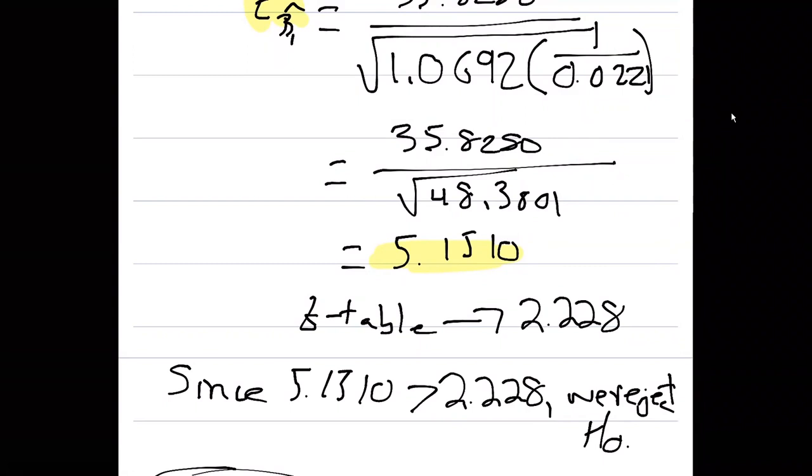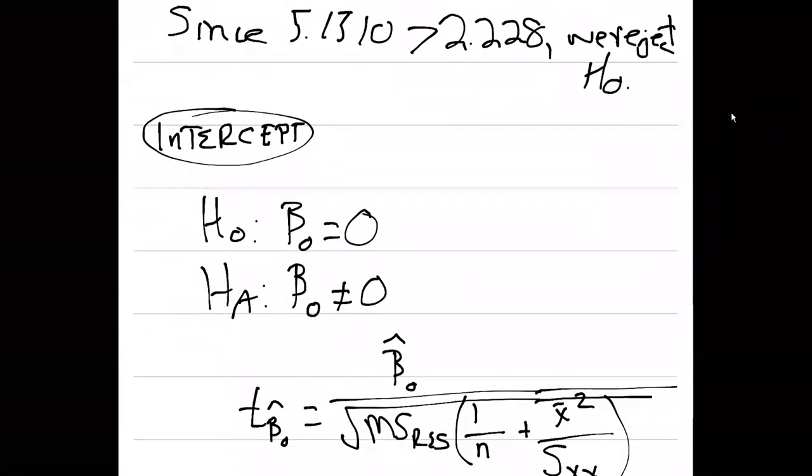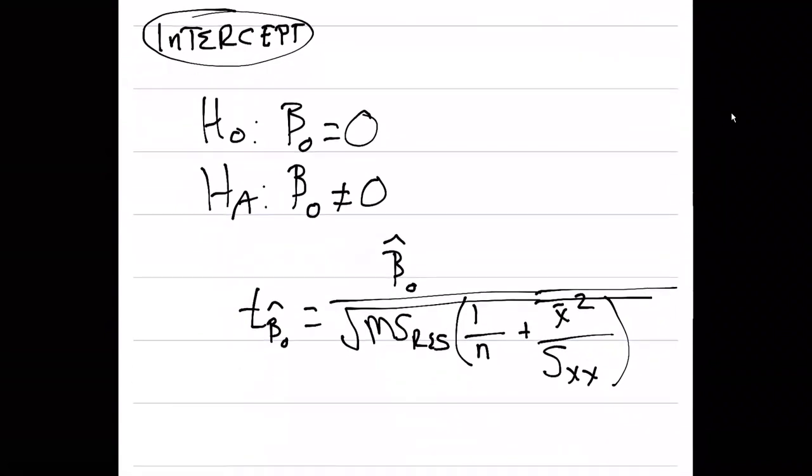We can do that for the slope, but we can also do it for the intercept. Here are the calculations for the intercept. Very similar. Instead of testing beta one, we're testing beta zero. Our null hypothesis is that beta zero equals zero, and our alternative is that beta zero does not equal zero.